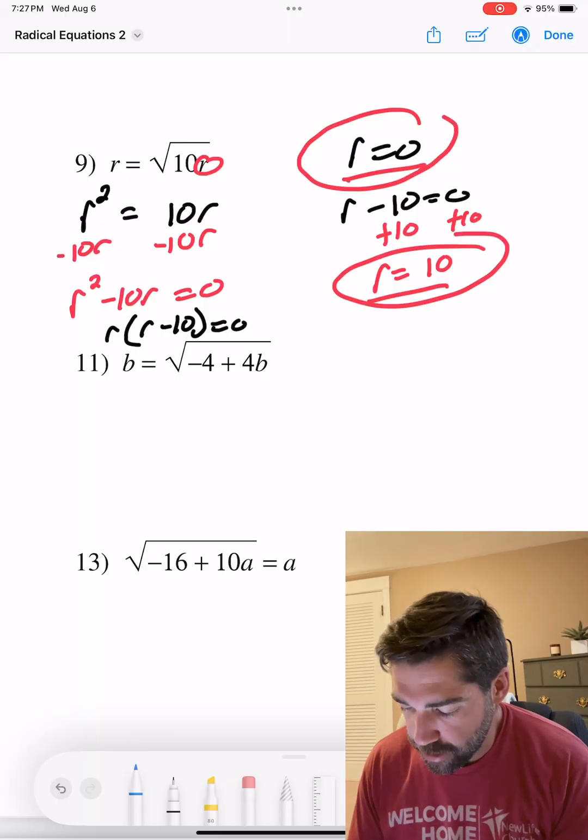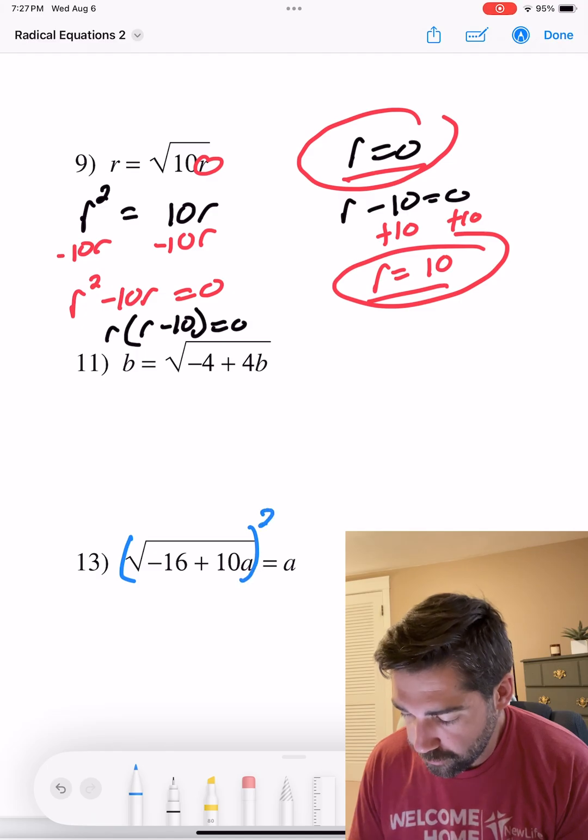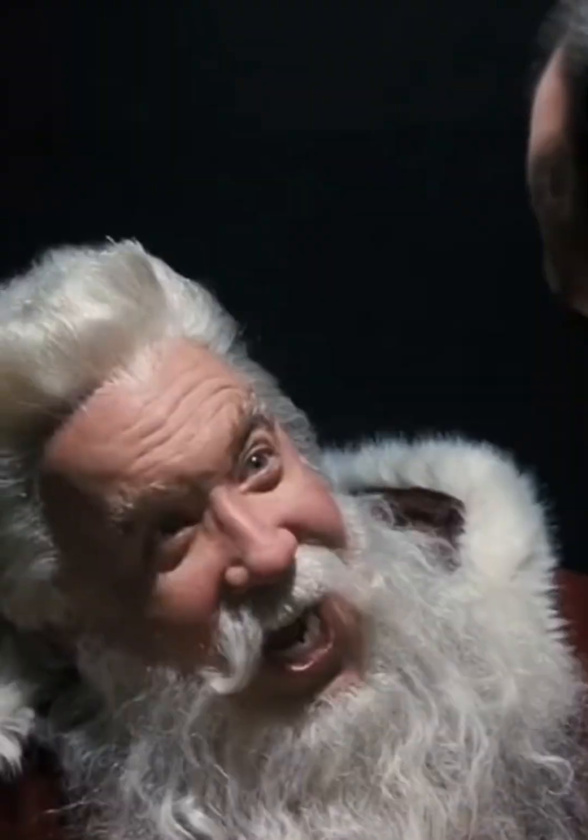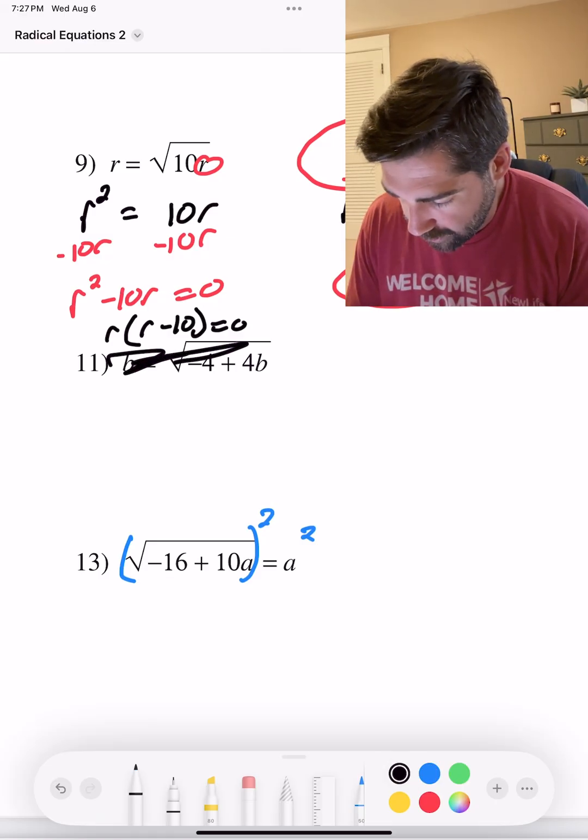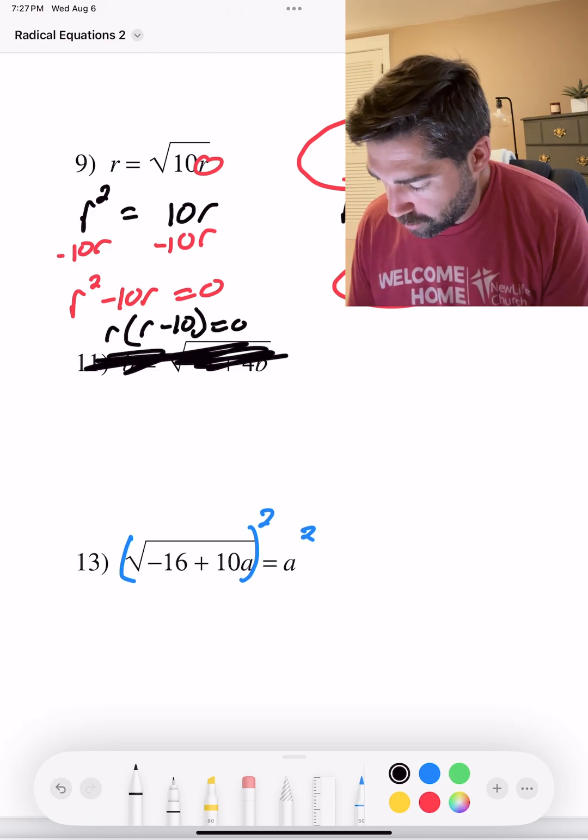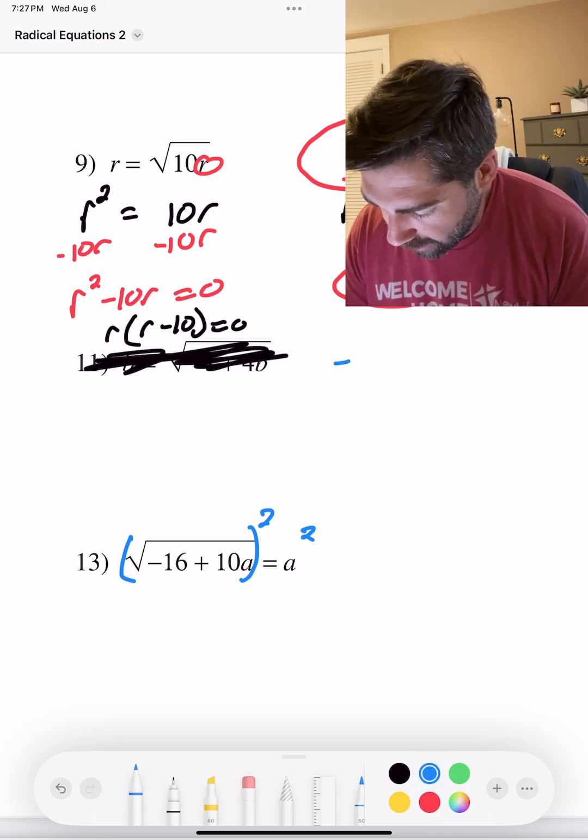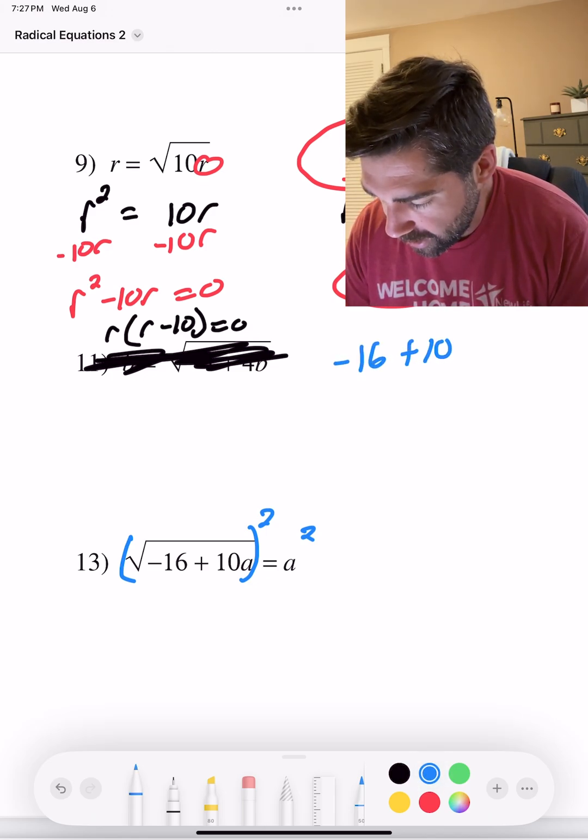Let's do 13 just for space reasons, not outer space. We'll act like this guy doesn't exist and we'll use that. Square both sides. We have negative 16 plus 10a equals a squared.